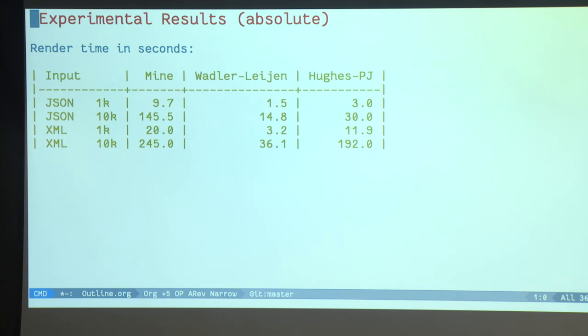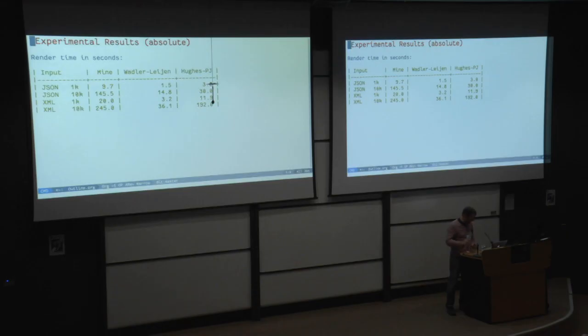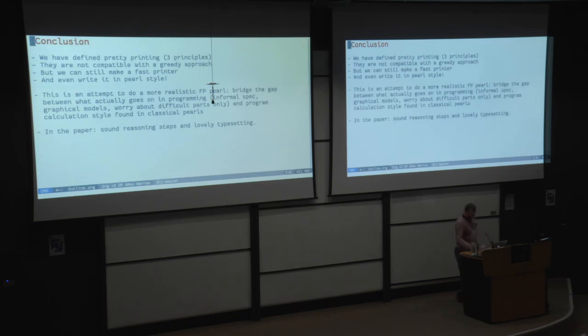So even though I didn't care about absolute performance, I cared only about asymptotic, the absolute performance is acceptable. So it's about 10 times as slow as the Wadler library with Dan Lyons implementation. It can probably do better. But in any case, for most purposes, it's good.